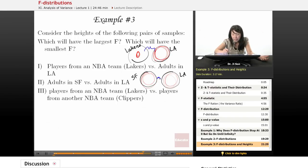But their averages should probably be similar, because it's not like San Francisco is known for super tall people or LA is known for super tall people. So this difference between the groups will probably be very small, but the within group variability will be very large. So I would guess this would have actually a pretty small F.